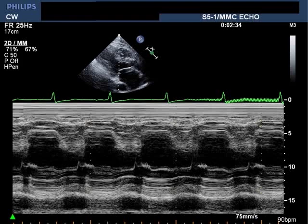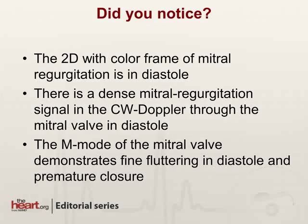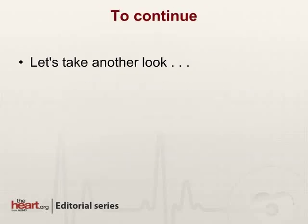However, you also see that the mitral valve closes considerably before the onset of electrical systole, by timing the closure of the mitral valve to the electrocardiogram at the top of the screen. So this is a summary of the findings: we have diastolic mitral regurgitation that is actually more impressive to the eye than the systolic mitral regurgitation, corroborated by the continuous wave Doppler and the M-mode demonstrating premature closure of the mitral valve with diastolic fluttering of the anterior leaflet.